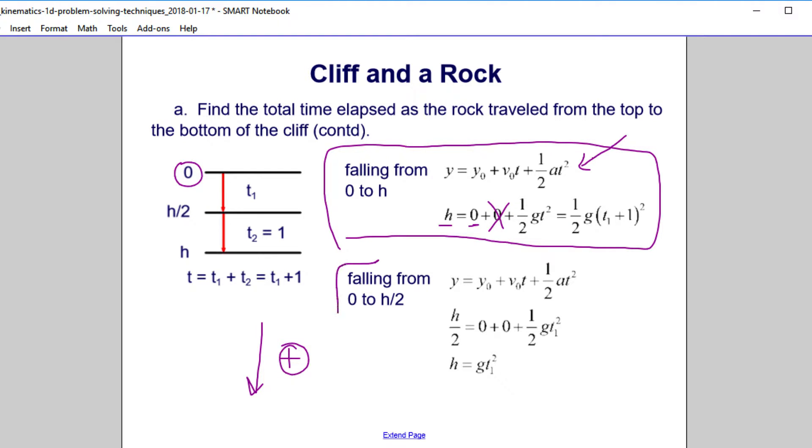Now, we fall from 0 to h over 2. That's this position here. Our initial height is h over 2. Our final height, once again, is 0. We hit the bottom. And you can see right here again, we have no linear component of t. And we have, once again, acceleration. But this time, the variable is t1, because you're only falling.